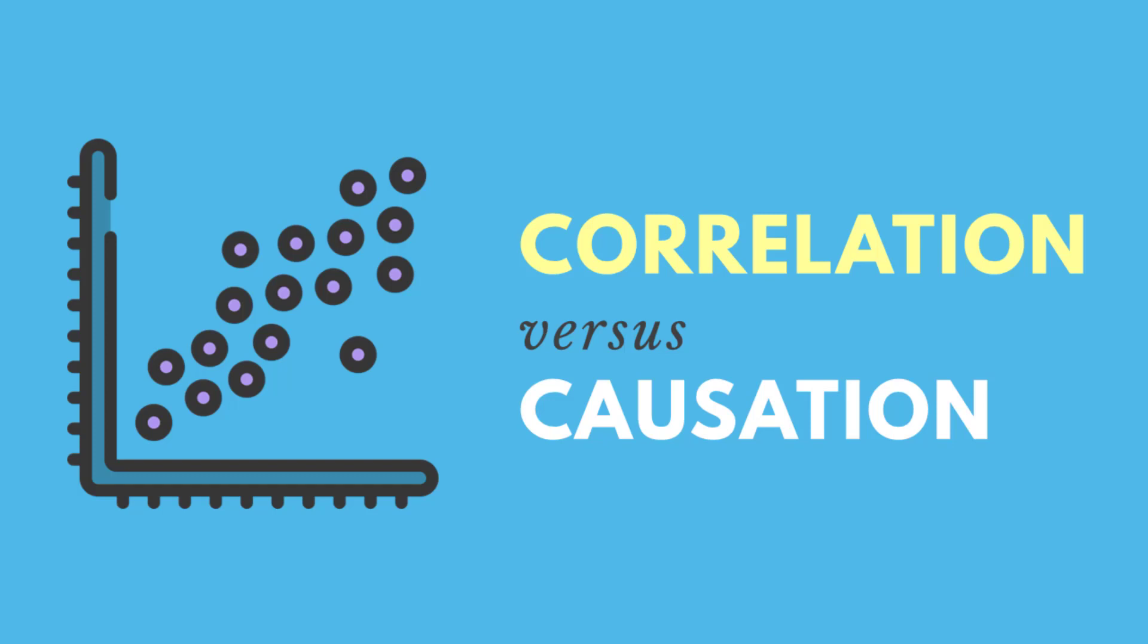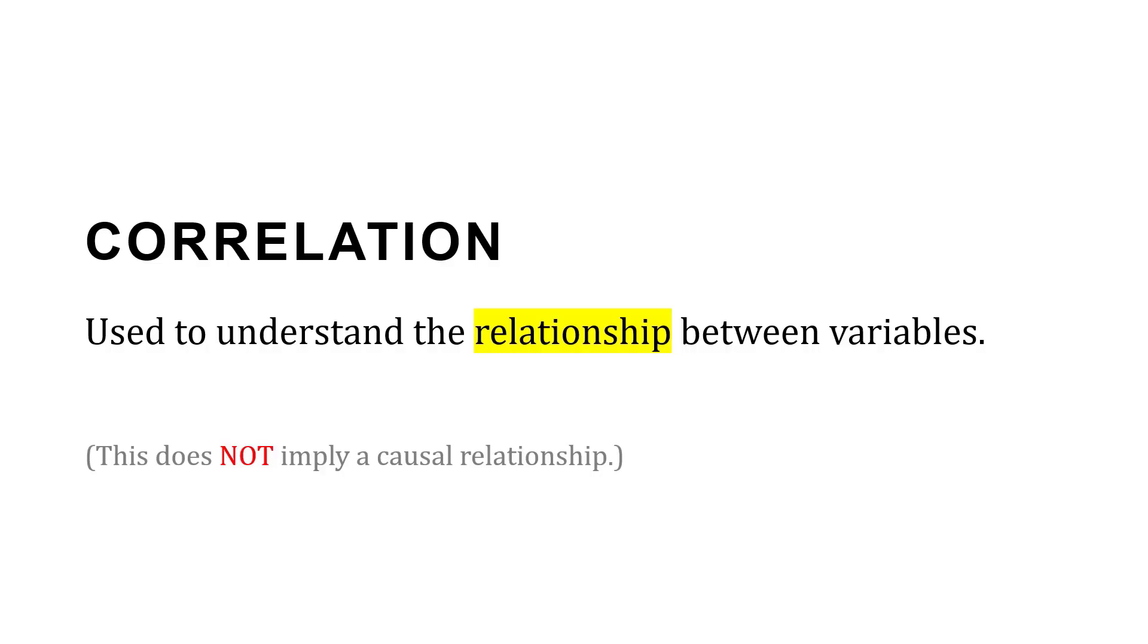No discussion of correlation is complete without talking about the distinctions between correlation and causation. Correlation is used to understand the relationship between variables, but this does not imply a causal relationship. It doesn't mean a change in one is causing a change in the other.